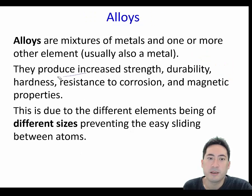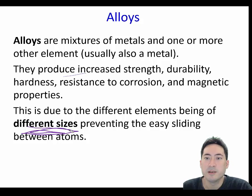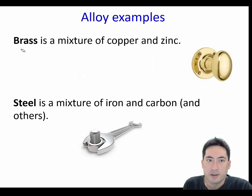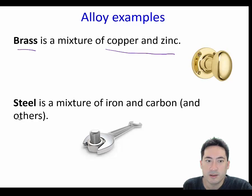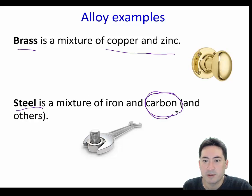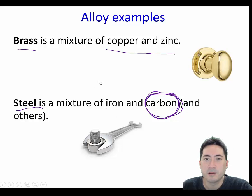Moving on to alloys — going back to that demonstration, you can see that the different atom sizes is what creates those extra properties. Remember some examples: brass is a mixture of copper and zinc, and steel is probably the most important one, and also one of the stranger ones, because it doesn't actually have a mixture of metals — it has a non-metal as its main second element.